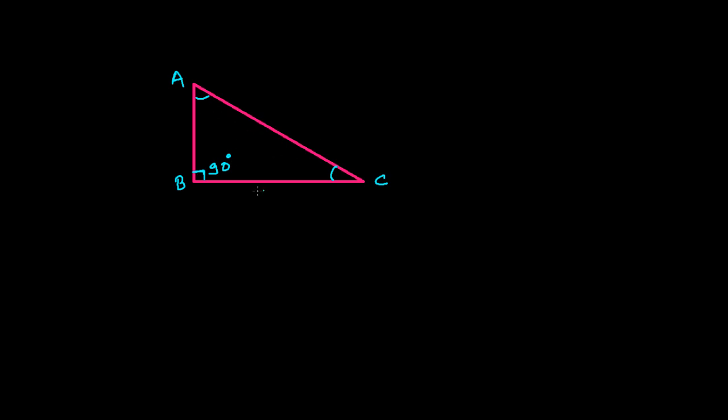Whenever it is a right angle triangle, always keep in mind that it always follows the Pythagorean rule. Any right angle triangle follows the Pythagorean rule, and the Pythagorean rule is square of the hypotenuse.